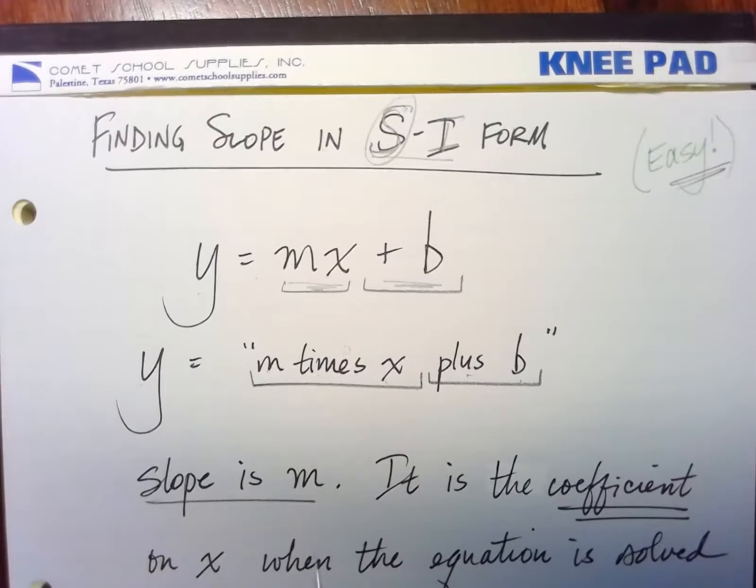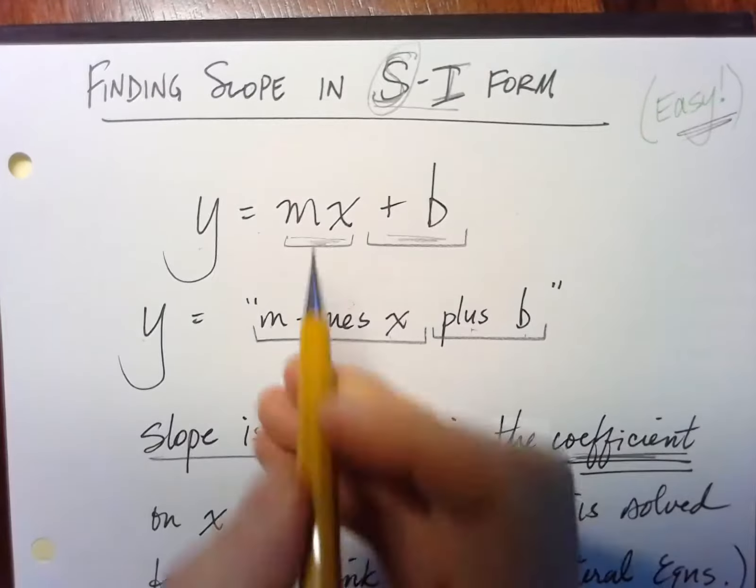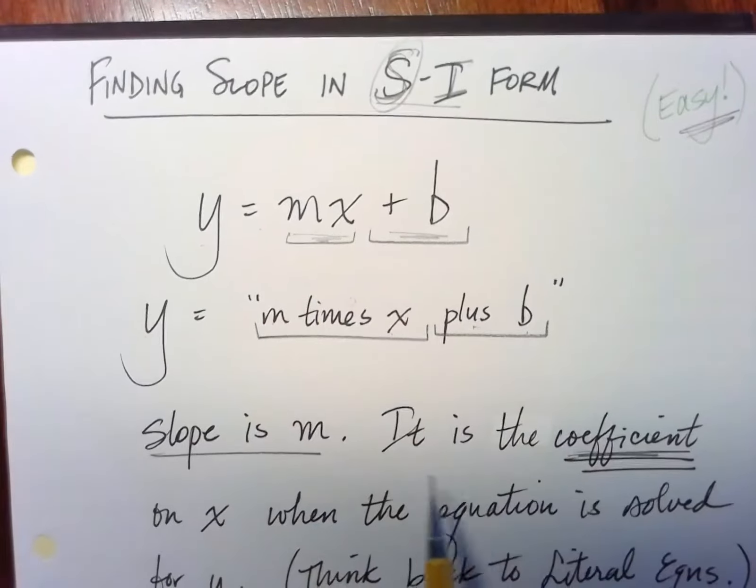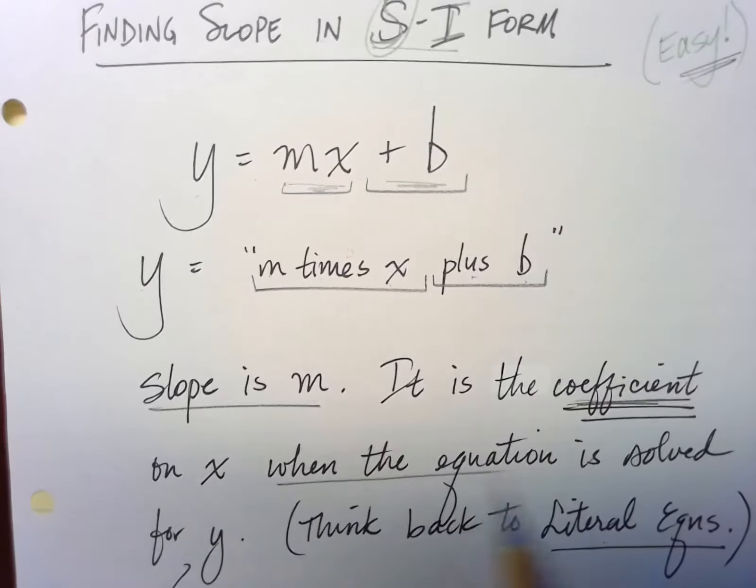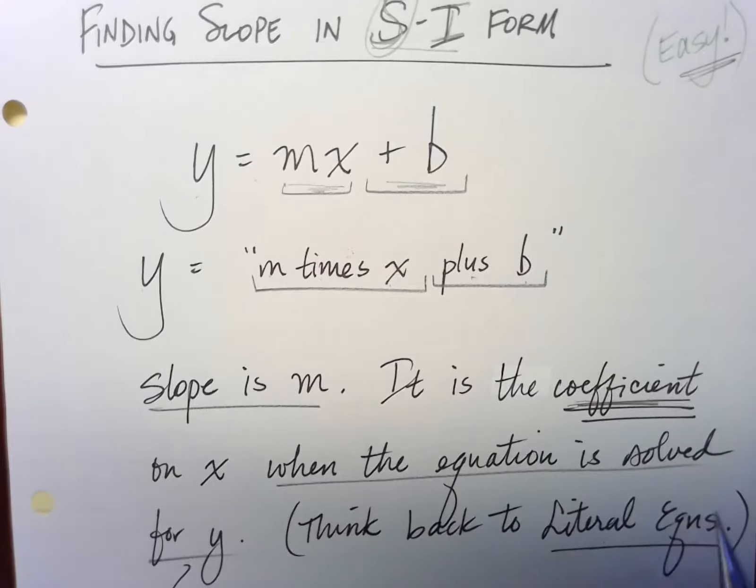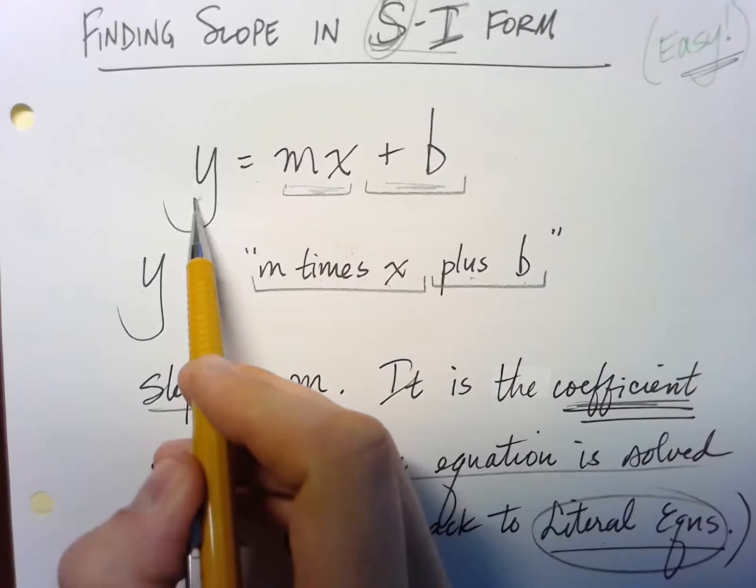So the slope is m. It is the coefficient here. If it's m times x, then m is the coefficient on x when the equation is solved for y. Think back to literal equations. So I've isolated the y by itself.